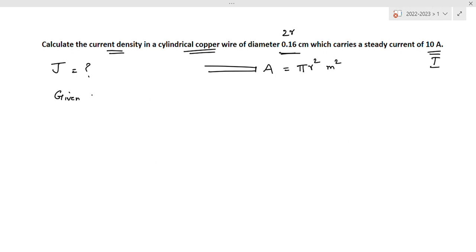I is equal to 10 amperes. Radius diameter 2r, twice the radius, 0.16 cm which is equal to 0.16 into 10 power minus 2 meter.